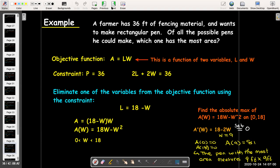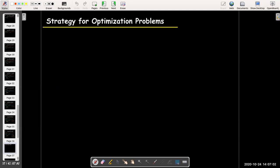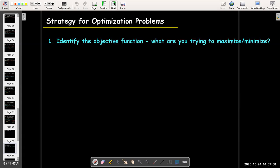So, let's look at what is our strategy. What steps did we use in solving this problem? So, the first thing we did is we identified the objective function. What are we trying to maximize or minimize?